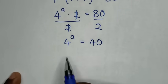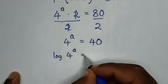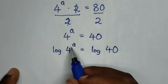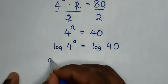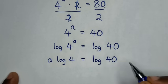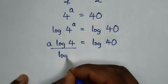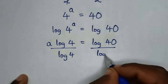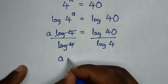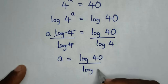Then in the next step, we apply log on both sides. So it will be log of 4 power a is equal to log of 40. This power a will move to the front, so it will be a log of 4 is equal to log of 40. Then we divide by log of 4 on both sides, so this and this will cancel, then it will be a is equal to log of 40 over log of 4.